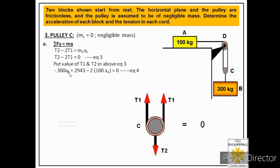This equation still has two unknowns — aA and aB — so we cannot solve it directly. We need to find a kinematic relationship between the two accelerations in order to reduce to a single unknown. We must analyze the motion of the system to find that constraint.